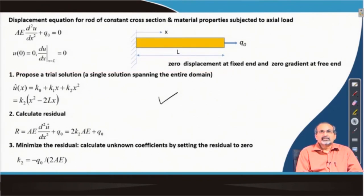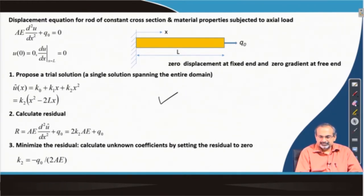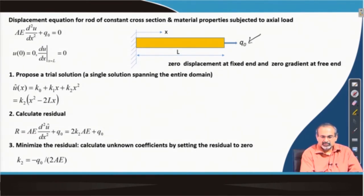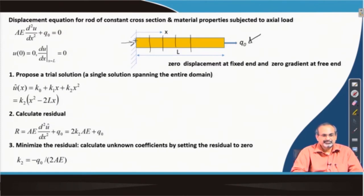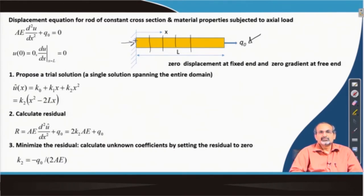Let us look at the physical significance of the problem. You have an element on which you are applying a load q₀. The element is essentially a one-dimensional one of length L and you are essentially modeling the displacement of different sections of the element from the fixed support through this governing equation. We have assumed a constant cross section as well as constant material properties which surface through the Young's modulus. The cross section is capital A, Young's modulus is capital E, and U gives you the displacement field.